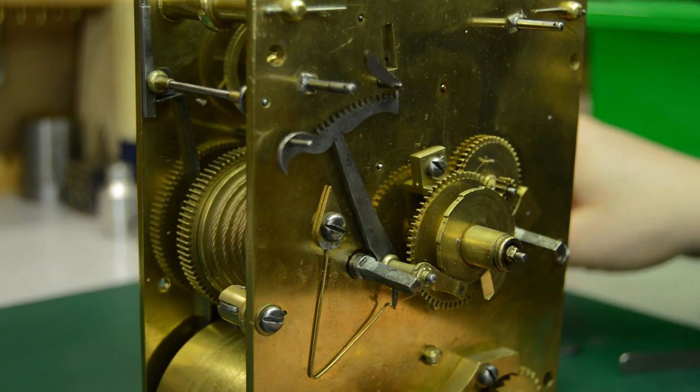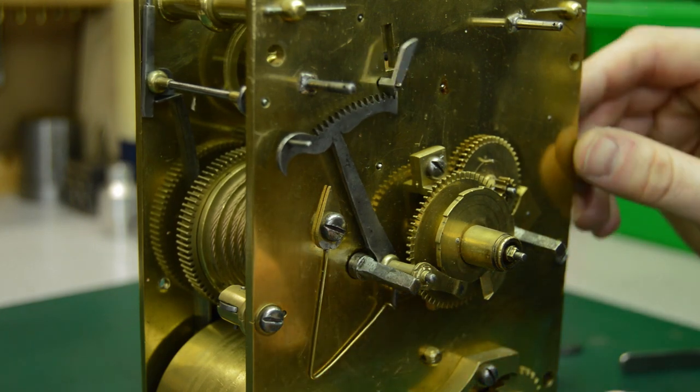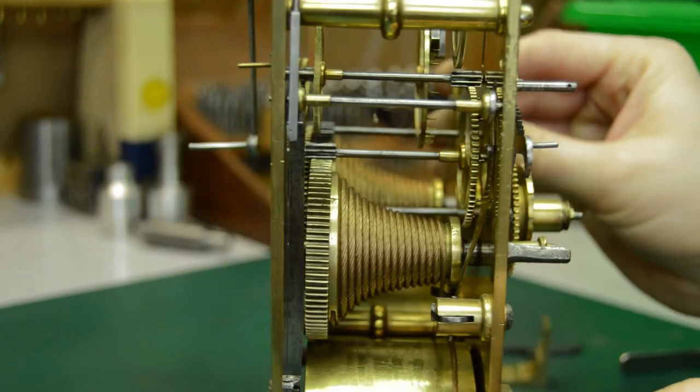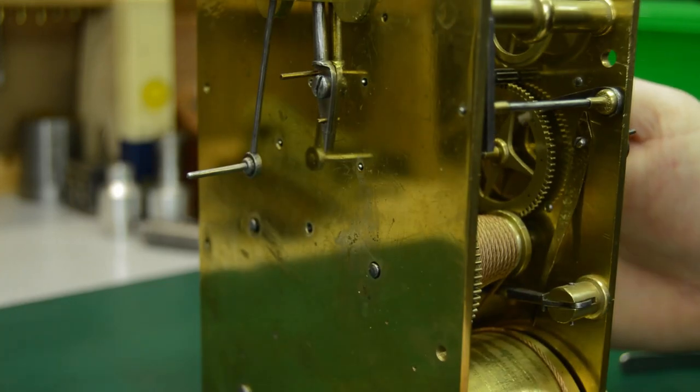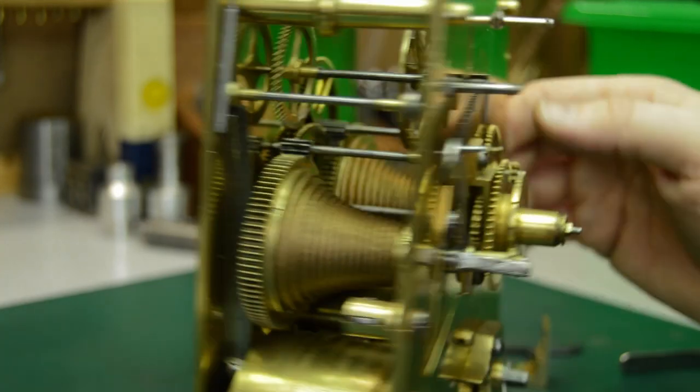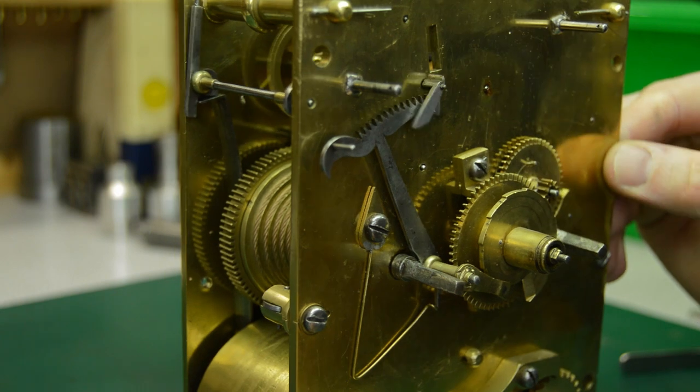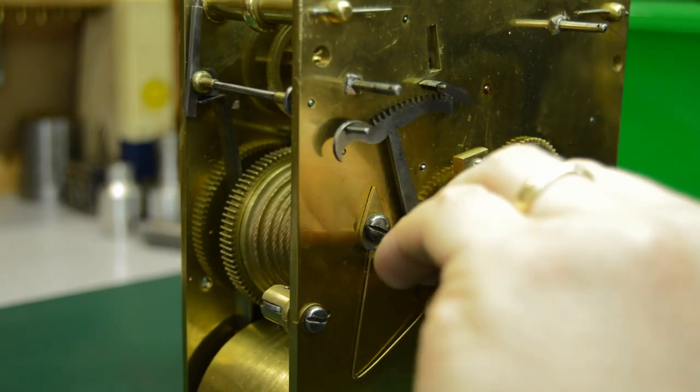I'm beginning by removing the stripe work from the front plate, the lifting lever, the rack. The gathering pallet was rather tight so I'll come back to showing you how I managed to get that off without levering it and potentially bending the pivot.